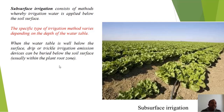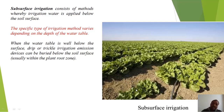The fourth method is subsurface irrigation, which consists of methods whereby irrigation water is applied below the soil surface. This is a specific type of irrigation method; its depth of water table varies. Pipe networks are provided below the soil at the root depth of the crops, delivering water directly to the roots. When the water table is well below the surface, drip or trickle emission devices can be buried below the soil surface.